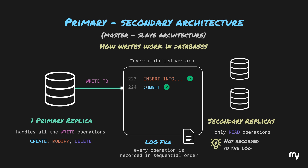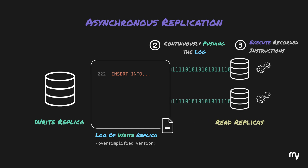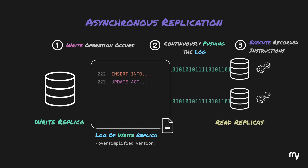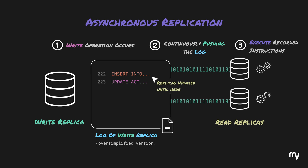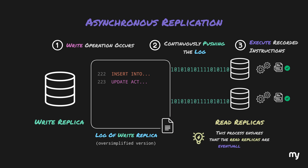Let's begin with the first replication strategy: asynchronous replication. In asynchronous replication, the primary replica continuously pushes the log to the secondary replicas, which execute the recorded statements to stay updated. For example, if a write operation occurs at position 223 while the read replica currently has the log up to position 222, the replica will pull any new entries beyond 222 — in this case the single statement at 223 — and execute it. This ensures that read replicas are eventually updated with the latest changes from the primary.